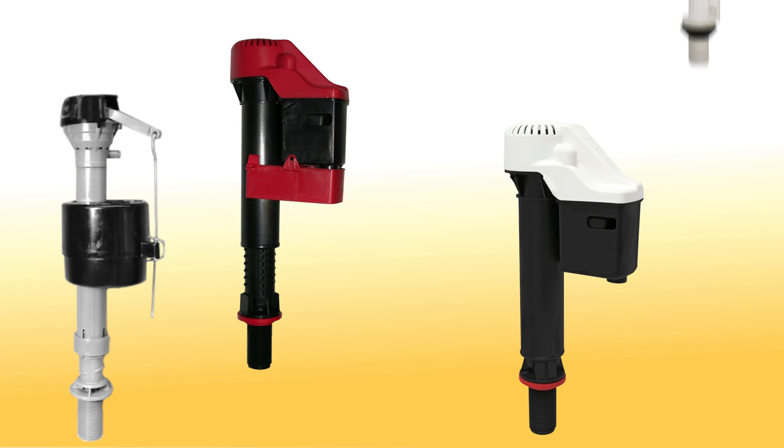Over the years fill valves have varied in design. A common model found in older toilets is the ball pack. It has an external ball shaped float that extends away from the valve and sits on top of the water.